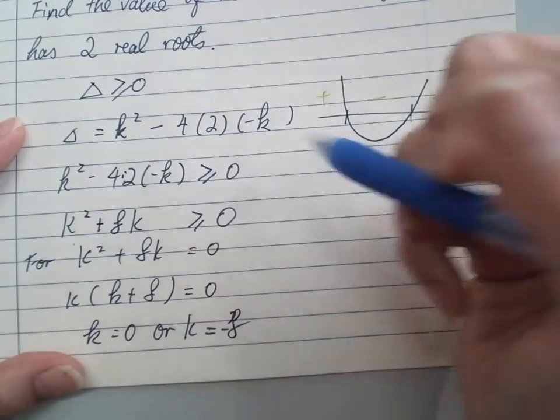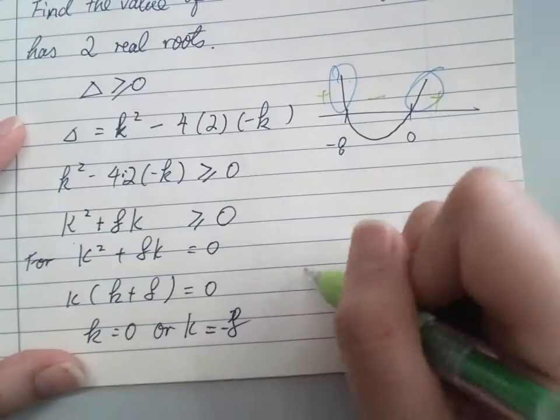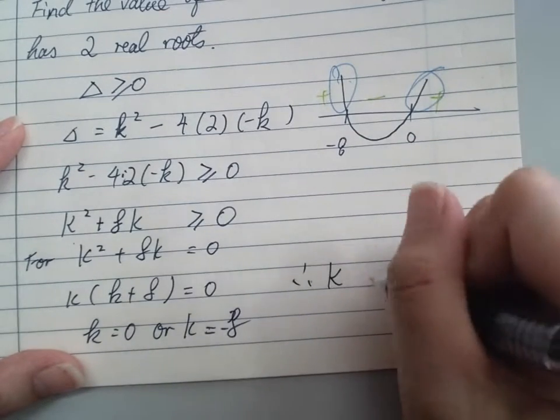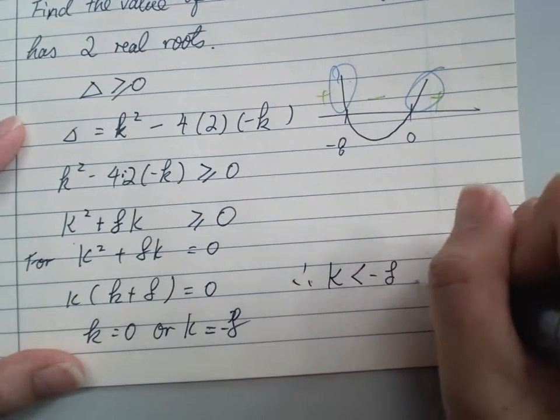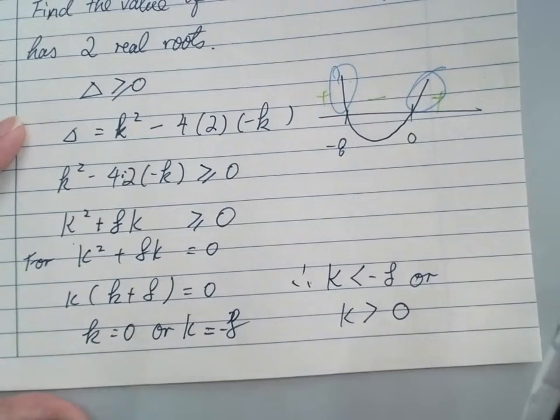Now I want it bigger than equals to 0. So I want this bit and this bit. Therefore, k have to be smaller than negative 8 or k have to be bigger than 0. And this is the case we got.